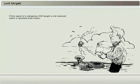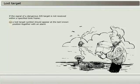If the signal of a dangerous AIS target is not received within a specified timeframe, a lost target symbol should appear at the last known position, together with an alarm.